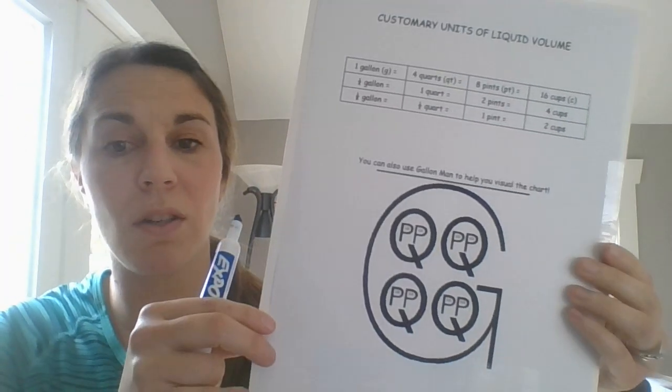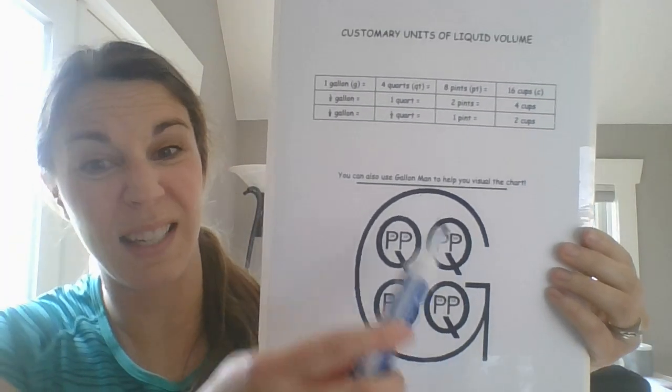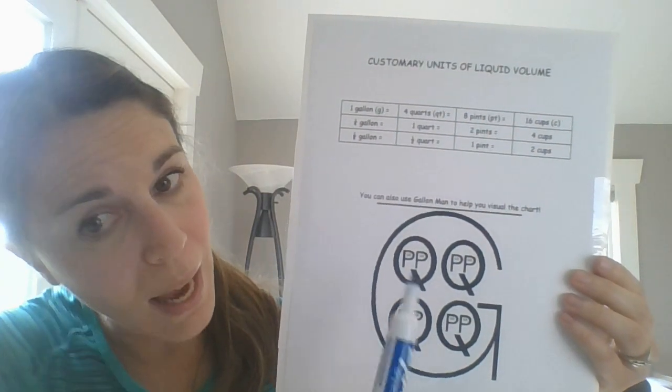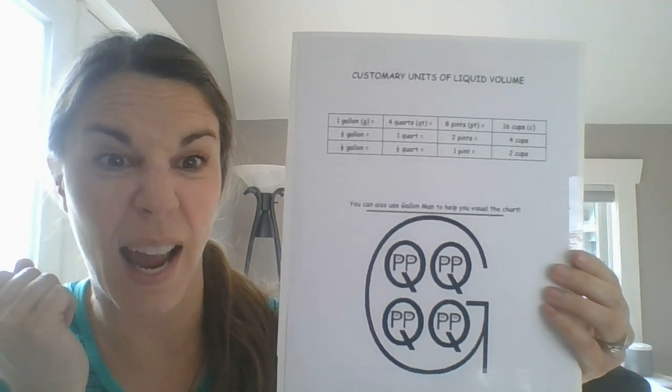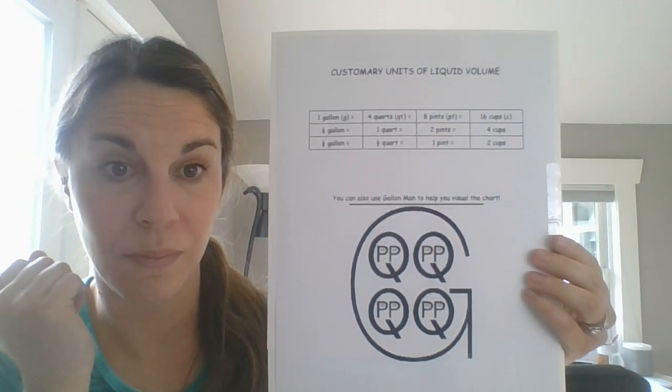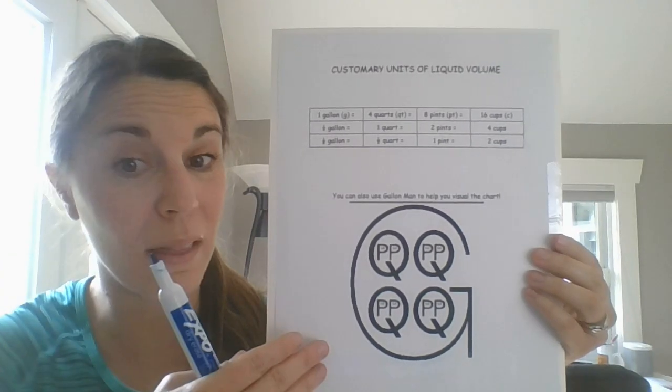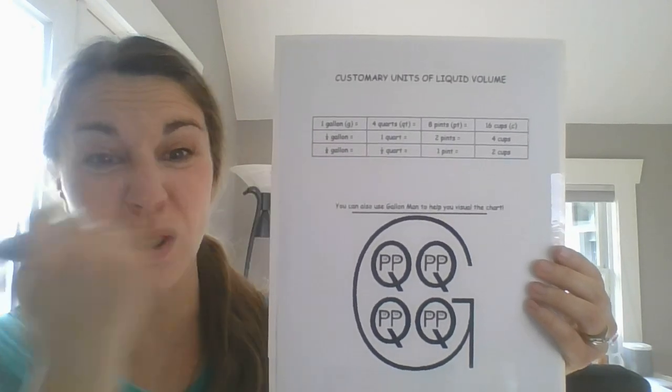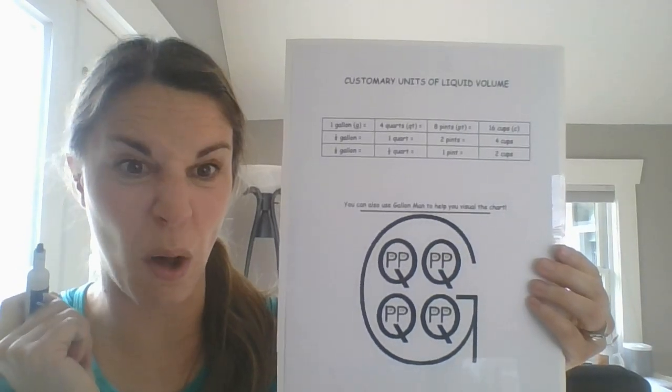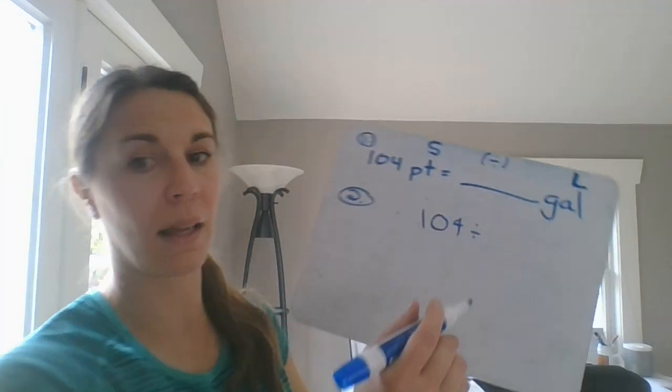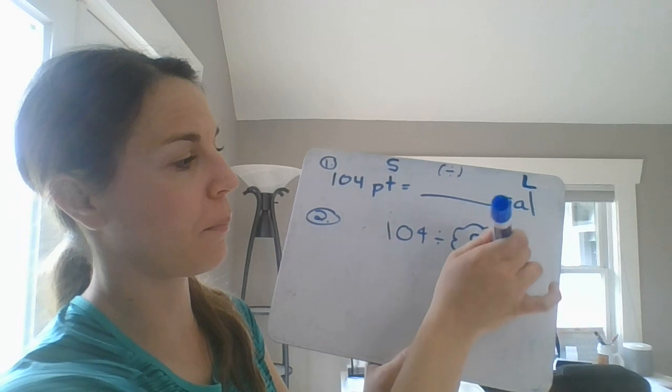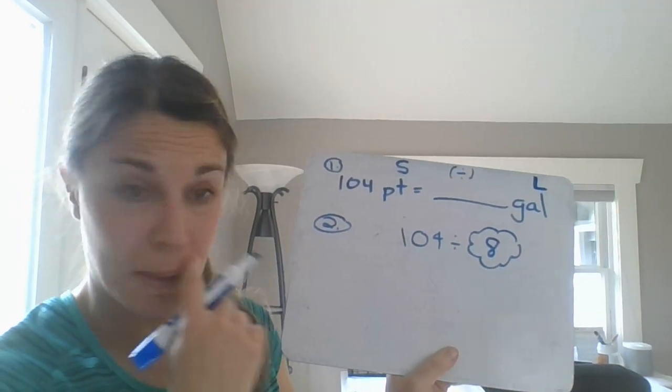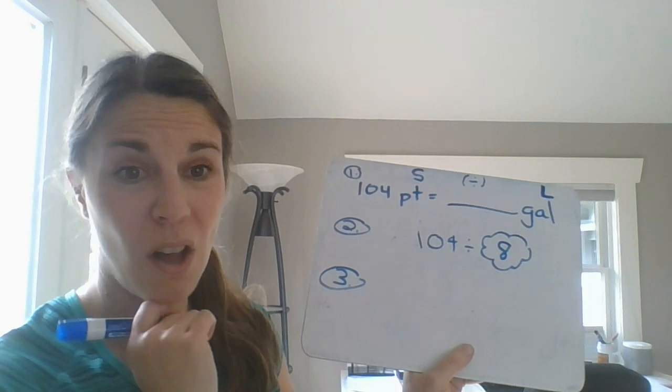And if I look at my visual here, if I'm looking at the entire gallon, gallon man, I can see there's two, four, six, eight Ps or eight pints. So if you like the visual better, that's fine. But you can also just go up to the chart, look across and that will help. So there's eight pints in one gallon. So I'm going to go back here and here's my magic number. I might bubble that. Now the third part is to solve.